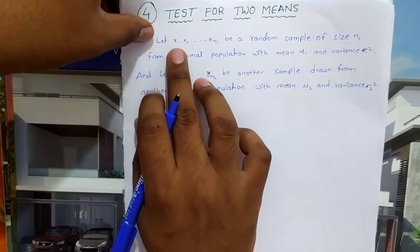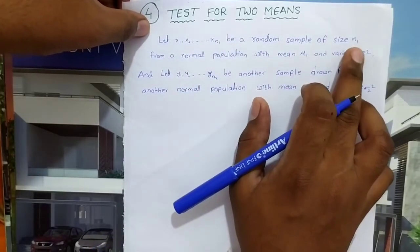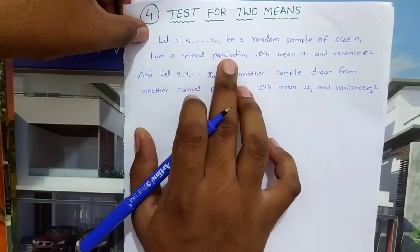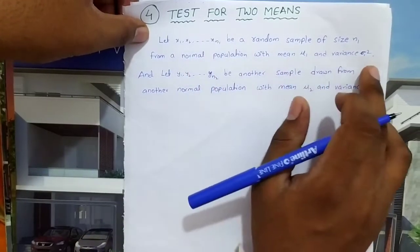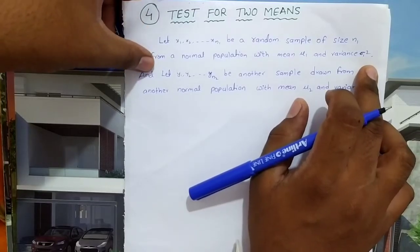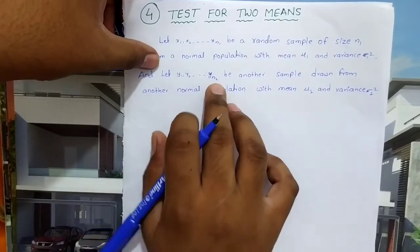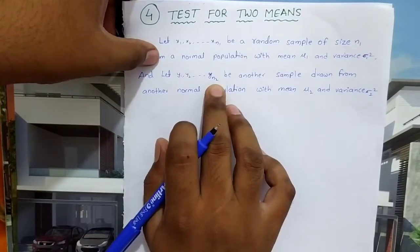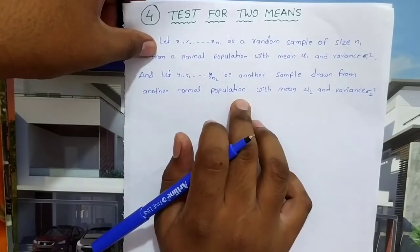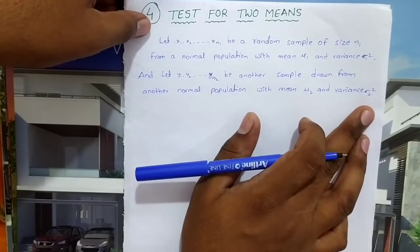Let x1, x2, up to xn1 be a random sample of size n1 drawn from a normal population with mean mu1 and variance sigma1 square. Now let y1, y2, up to yn2 be another sample drawn from another normal population with mean mu2 and variance sigma2 square.